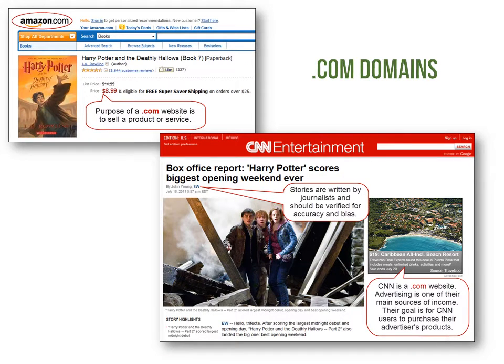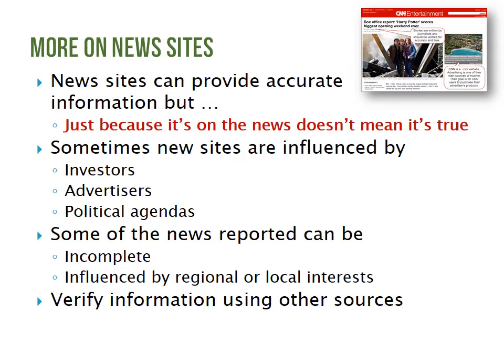Amazon.com's purpose is to sell products and services. For CNN.com, advertising is one of their main sources of income. News sites can provide accurate information, but just because it's on the news doesn't mean it's true. Sometimes news sites are influenced by investors, advertisers, or political agendas. Some of the news reported can be incomplete or influenced by regional or local interests.